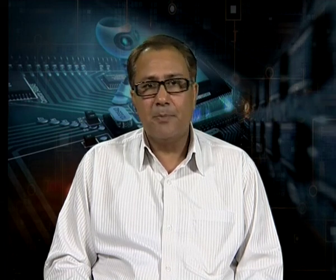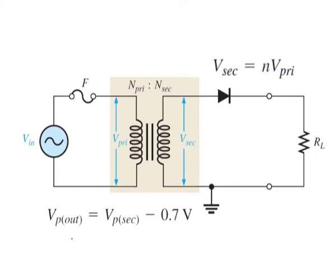To show the turns ratio on a schematic, it is common practice to show the numerical ratio directly above the windings. The secondary voltage of a transformer equals n times the primary voltage, where n is the turns ratio. If n is greater than one, the secondary voltage is greater than the primary voltage. If n is less than one, the secondary voltage is less than the primary voltage. If n equals one, then V_secondary equals V_primary. The peak secondary voltage V_peak_secondary in a transformer-coupled half wave rectifier is determined from this equation.